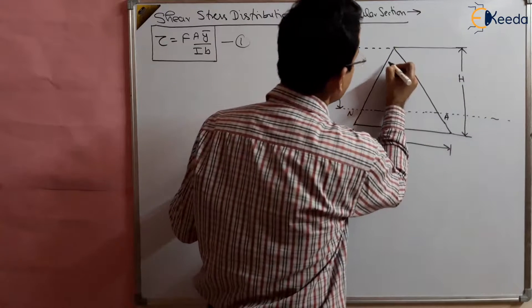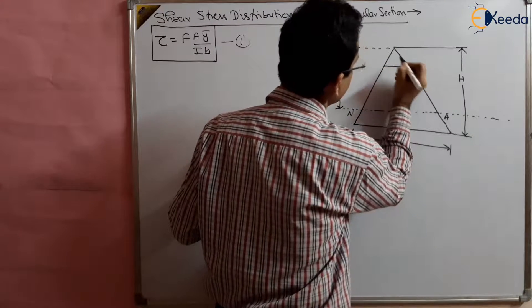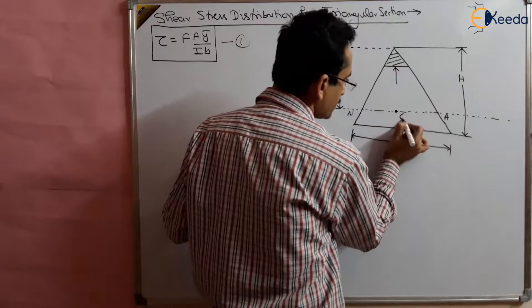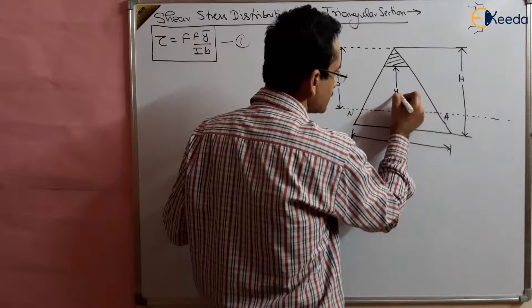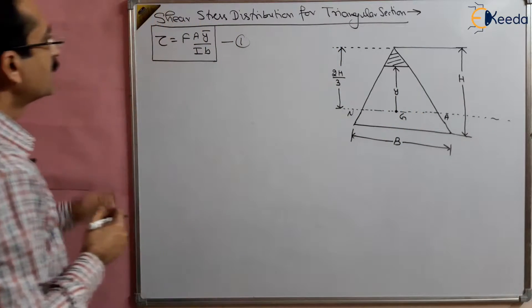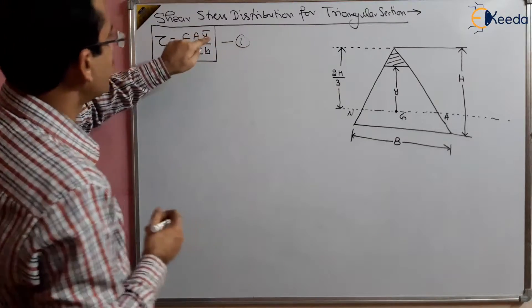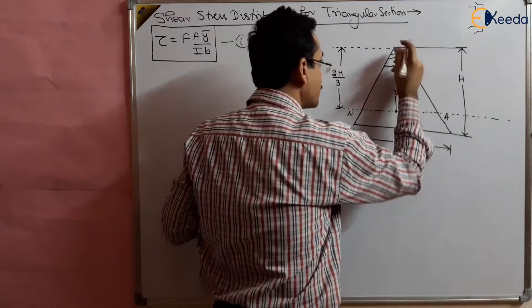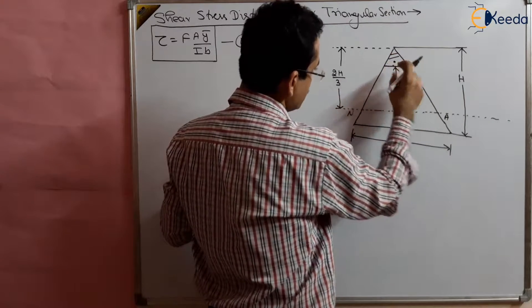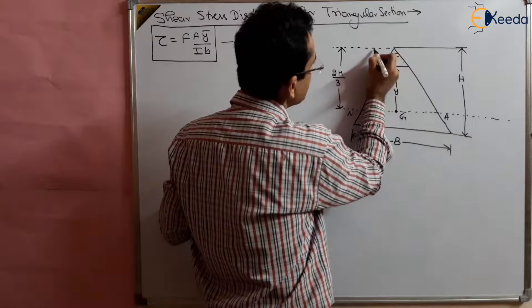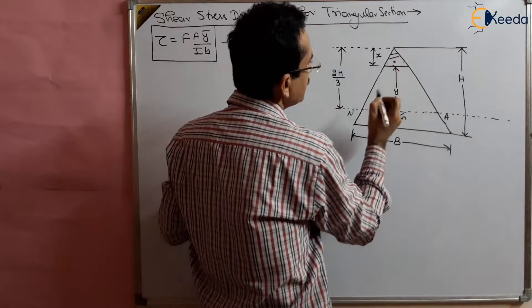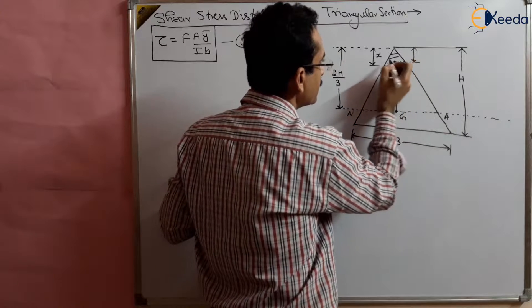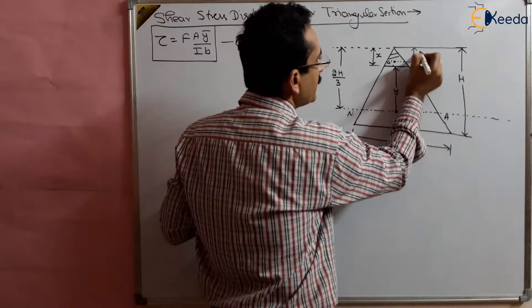If we take a small section at a distance y from the neutral axis, then ȳ is variable because the centroid of that small triangle will be lying at a certain distance. Suppose the distance of this triangle is x, then the centroid of this small triangle G' will be equal to two-thirds of x. Similarly, the overall centroid is two-thirds of H.